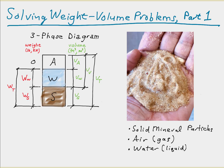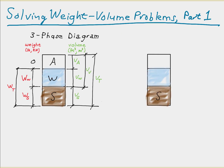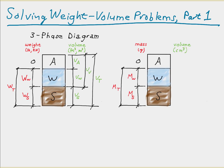It can be convenient to draw the three-phase diagram using mass instead of weight. When we use this method, we almost always use SI units. The mass units are expressed in grams and the volume in cubic centimeters. In this form, the left side uses M sub s for the mass of solids, M sub w for the mass of water, and M sub t for the total mass. The variables for the volumes on the right side are the same as before. We'll explain later when it is useful to use this formulation.